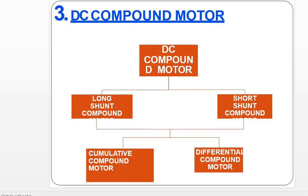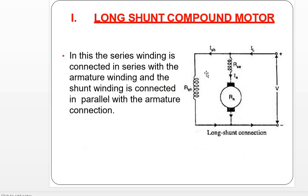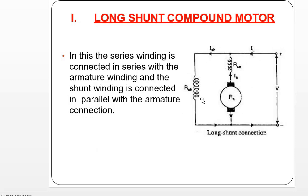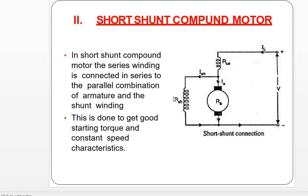Now we are going to talk about the compound motor. The compound motor has both a long-shunt type and a short-shunt type, as well as cumulative and differential configurations. In long-shunt compound motor, the series winding is connected in series with the armature winding and the shunt winding is connected in parallel — combining series and parallel connections. In short-shunt compound motor, the series winding is connected in series with the parallel combination of armature and shunt winding.